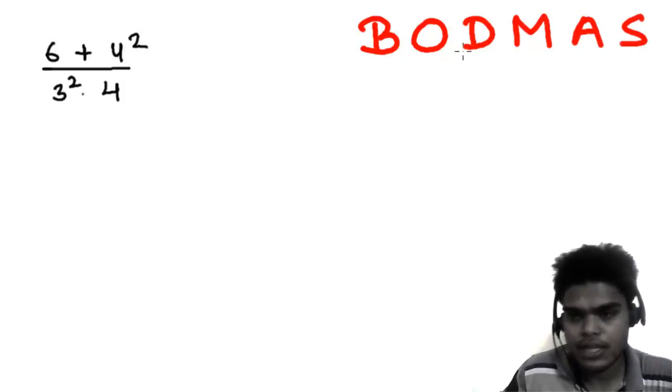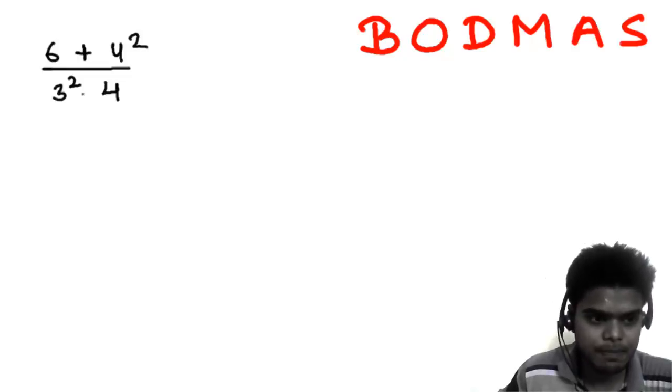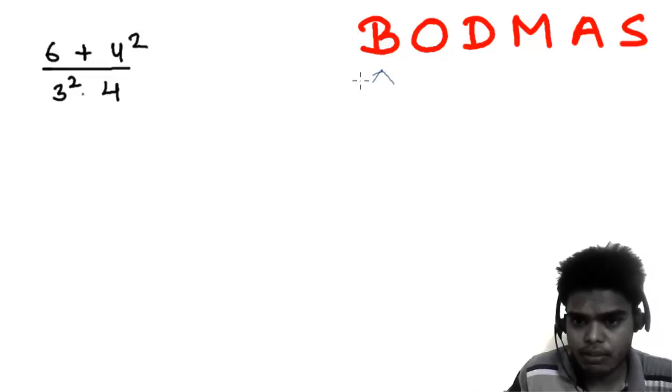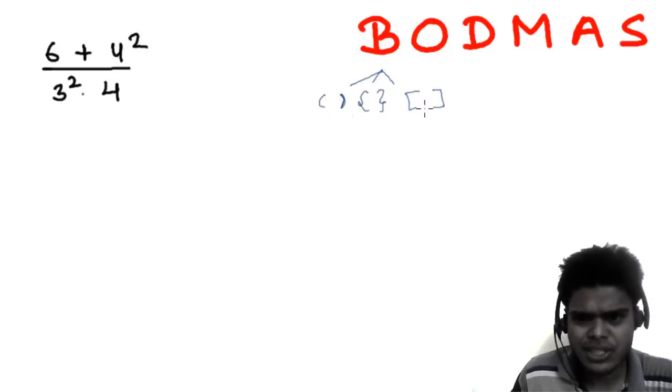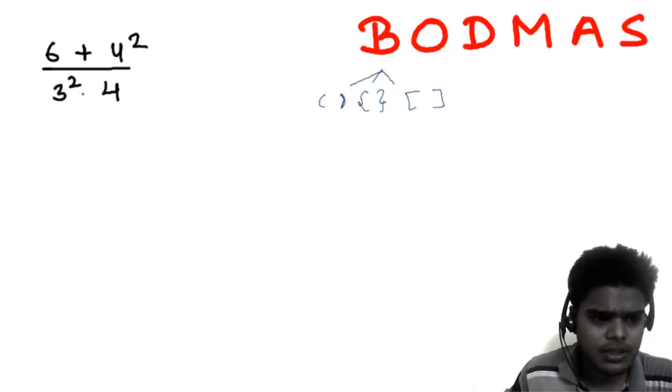As you know, in brackets we have three types. First we'll be doing this bracket, and then this middle bracket, and then this big bracket. Some people say parentheses, braces, and bracket - it's the same. And then other operations like division, you already know these things.